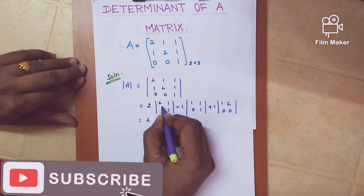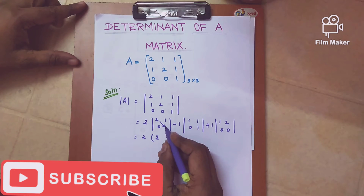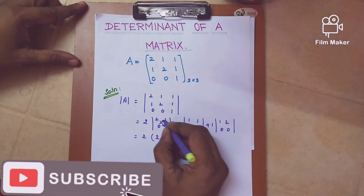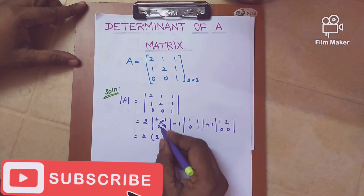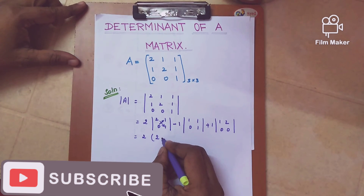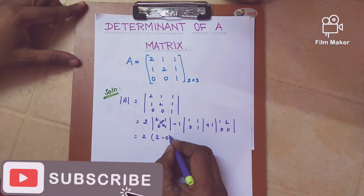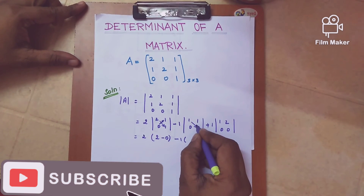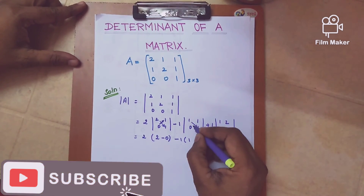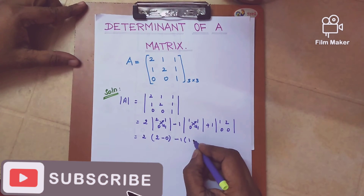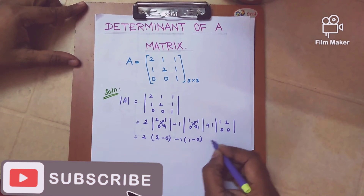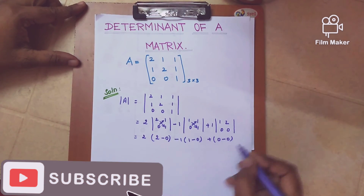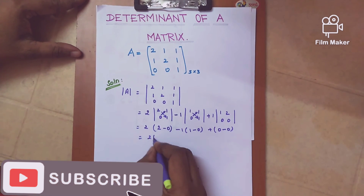Now we expand each 2x2 determinant. For the first: 2 multiplied by (2×1 minus 0×1), giving 2×(2−0). For the second: minus 1 multiplied by (1×1 minus 0×1), giving −1×(1−0). For the third: plus 1 multiplied by (1×0 minus 2×0), giving 1×(0−0).